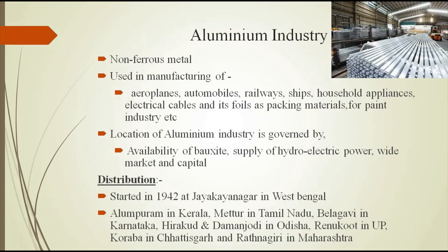The aluminum industry started in 1942 at Jayakayanagar in West Bengal — that was the first plant. Other places include Alampuram in Kerala, Mettur in Tamil Nadu, Biladavi in Karnataka, Hirakud and Dhamanjodi in Odisha, Renukot in Uttar Pradesh, Korba in Chhattisgarh, and Ratnagiri in Maharashtra. India holds 11th place in the world in aluminum production. Whatever aluminum we produce in India is not enough to meet demand, so we are importing aluminum to meet local demand.